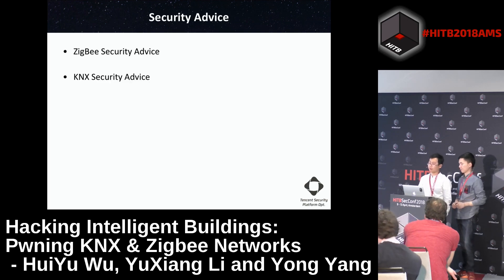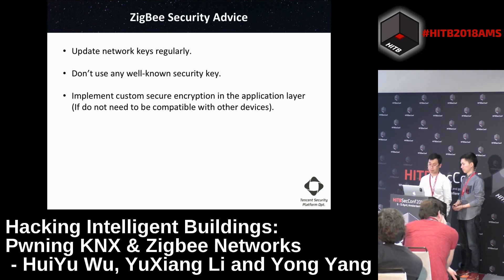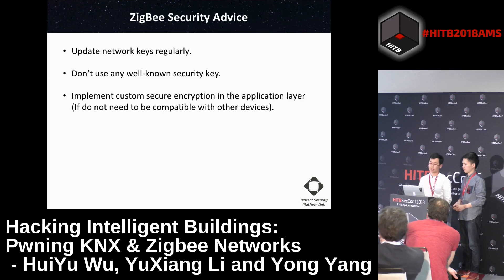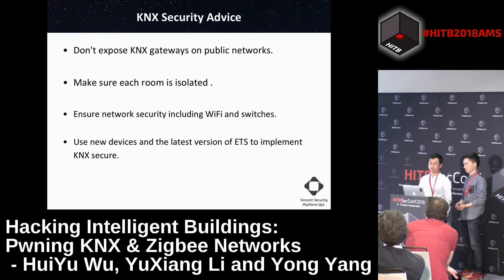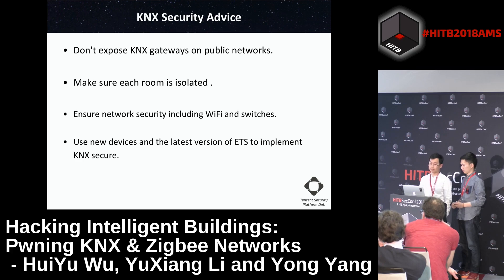In the final section, we provide some security advice on ZigBee and KNX networks. For ZigBee: update network keys regularly, don't use any well-known default key, and implement custom secure encryption in the application layer. For KNX: don't expose KNX gateways on public networks, make sure each room is isolated, ensure network security including Wi-Fi and switch security, use new devices and the latest version of ETS, and implement KNX Secure.